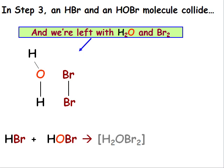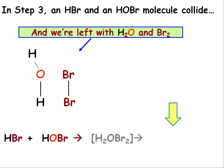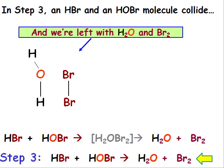Both of these molecules are very stable. We write these as products in the equation for this step. We now summarize step 3 as HBr plus HOBr gives H2O plus Br2.